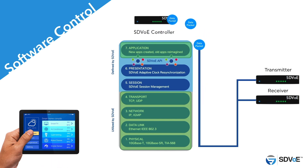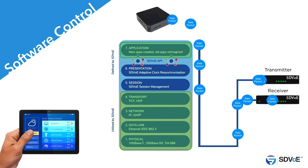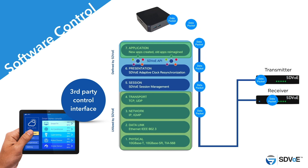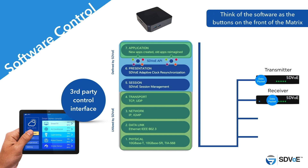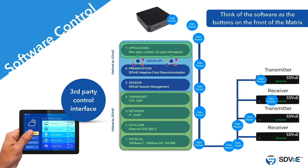There are a number of ways this can work. A popular choice amongst SDVoE manufacturers today is to place this software onto a dedicated small form factor computer which lives on the same network as the transmitters and receivers. This computer then allows any third party interface to control the endpoints. You could think of this software as the buttons on the front of a matrix switch, but because it's driven by software, it's far more powerful. And if you need to add more endpoints, you don't need any more computers — you just need to make sure you have enough ports on your network.